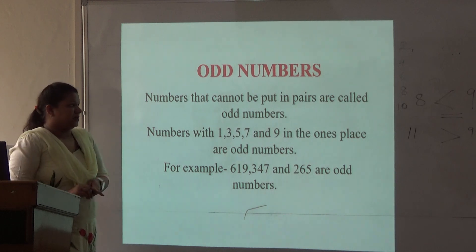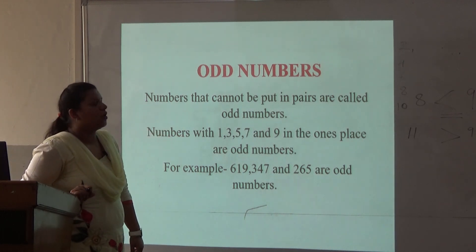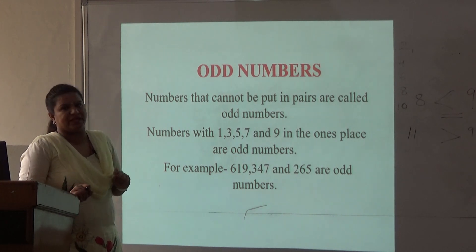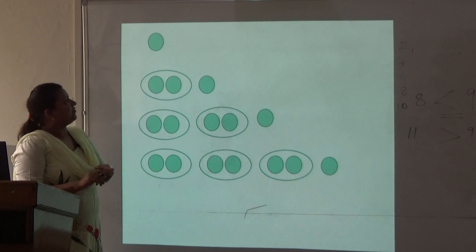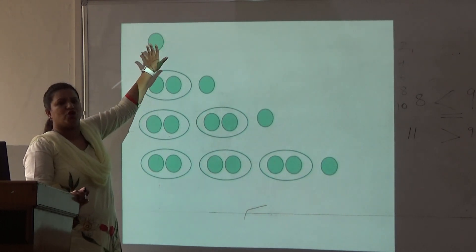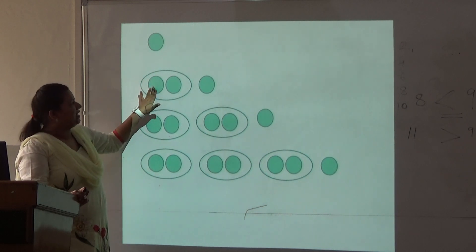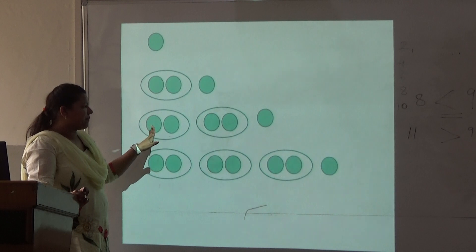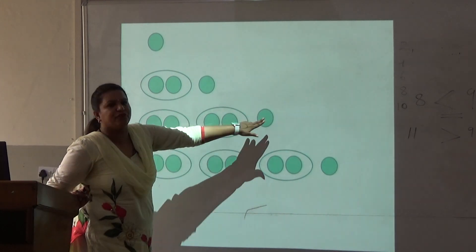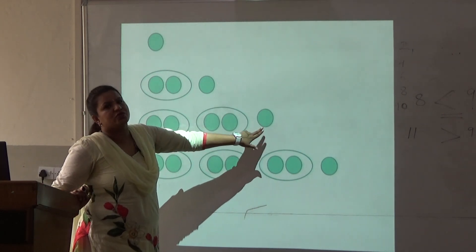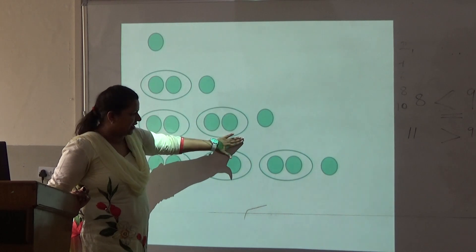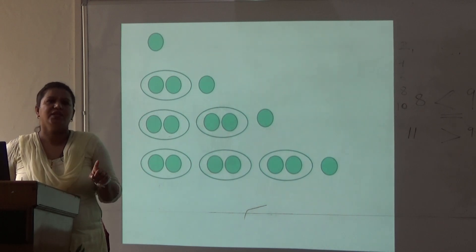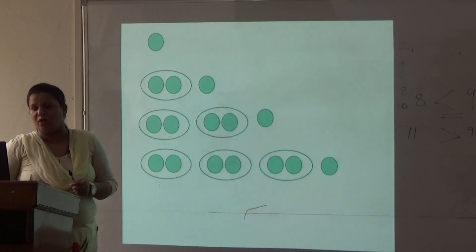Now what are odd numbers? Numbers that cannot be put in pairs are called odd numbers. Numbers with 1, 3, 5, 7, and 9 in the ones place are odd numbers. If I have only 1 bindi, it is not forming any pair — so this is an odd number. If I paste 3 bindis, I only have 1 pair with 1 left over — this is an odd number. If I paste 5 bindis, I can get only 2 pairs and one is left alone — so this is also an odd number. 1, 3, 5, 7, 9 — they are all odd numbers. Whenever any number ends with 1, 3, 5, 7, or 9, they are all odd numbers.